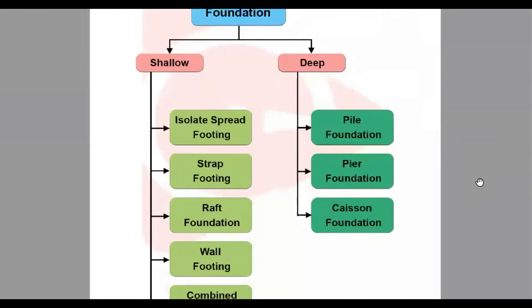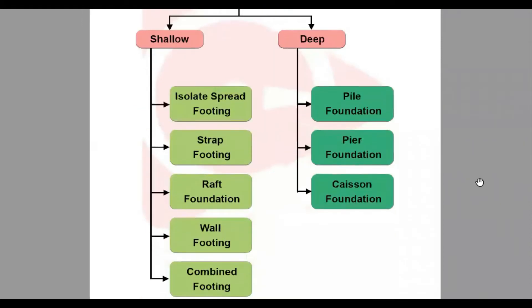Shallow foundation types are: spread footing, strap footing, raft foundation, wall footing, and combined footing. These are the shallow foundation types.